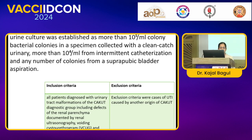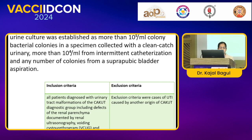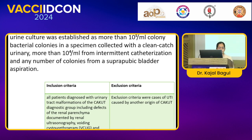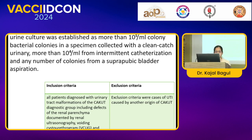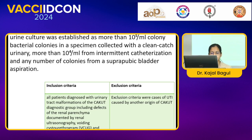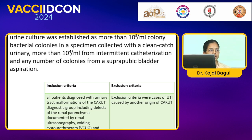Inclusion criteria: all patients diagnosed with urinary tract malformation, diagnosis of renal parenchyma documented by USG, voiding cystourethrogram, and radionuclide scans. Exclusion criteria: cases of UTI caused by an origin other than CAKUT.